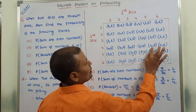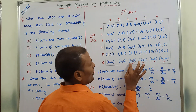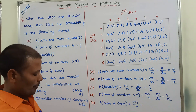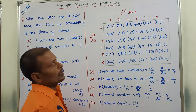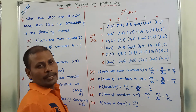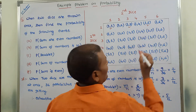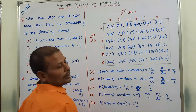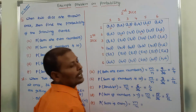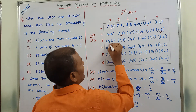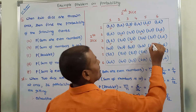The sum of the first number and second number must be an even number. The favorable cases are: 1+1=2 (even), 1+3=4 (even), 1+5=6 (even), 2+2=4 (even), 2+4=6 (even), 2+6=8 (even), 3+1=4 (even), 3+3=6 (even — wait, 3+5=8, even), 4+2=6 (even), 4+4=8 (even), 4+6=10 (even), 5+1=6 (even), 5+3=8 (even), 5+5=10 (even).